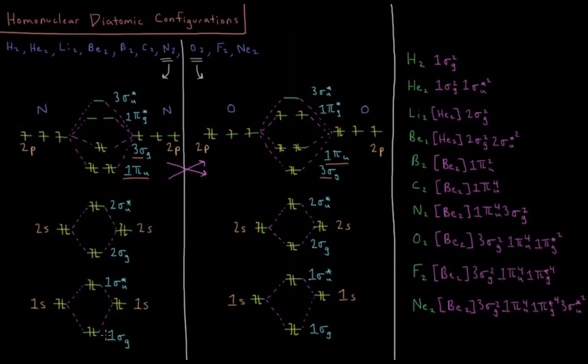We discussed in the previous video that our 1s orbitals overlap to form 1sσg and 1sσu* bonding and antibonding orbitals.